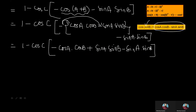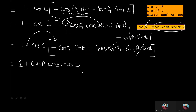As you can see, the sinA·sinB terms cancel out, and we are left with 1 plus cosA·cosB·cosC, which is exactly the right-hand side required in the question. I hope you enjoyed the step-by-step solution here. Thank you for your time.